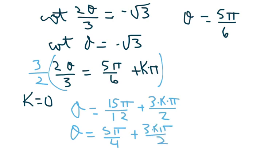You're going to check for all your k's, and you're going to find you only have one solution, which is 5 pi over 4. And you just do that, all right?